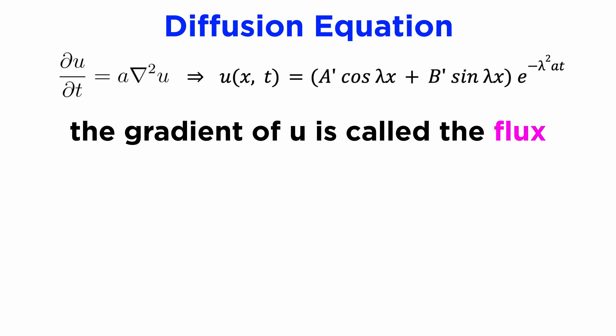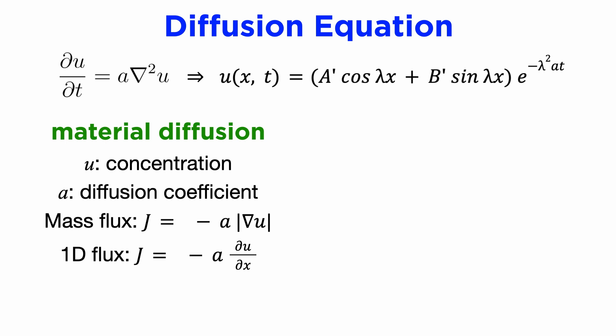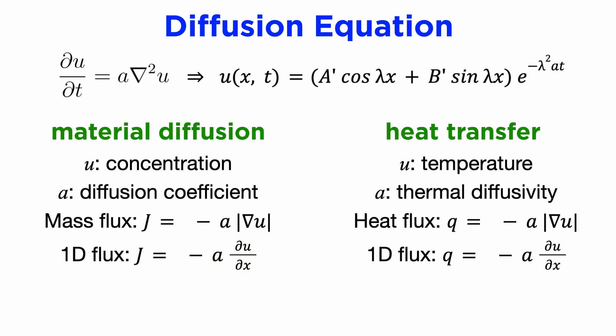In the diffusion equation, the gradient of our solution u has its own physical interpretation called the flux. In 1D mass transfer, we can write that capital J, which is the mass flux, is equal to negative a times del u del x, which represents the number of particles passing through a given point x per unit time. In 1D heat transfer, the equivalent property is written as Q, which is the heat flux representing the thermal energy passing through a point per unit time.